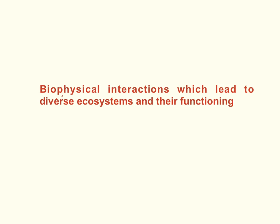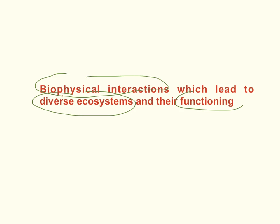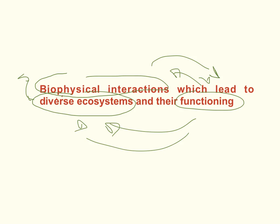The first dot point is biophysical interactions, which lead to diverse ecosystems and their functioning. There are three parts we need to be aware of: biophysical interactions, diverse ecosystems, and functioning. You could start looking at any of them first because they're all interconnected — there's a bit of a cycle. Biophysical interactions create diverse ecosystems, and these diverse ecosystems all function in different ways. The biophysical interactions lead to different functioning, and that functioning also has an impact on the diversity of ecosystems. A good student will be able to understand all three components and talk about the interactions within them.